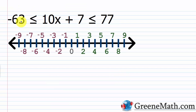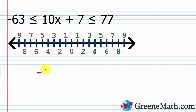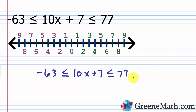For the next example, we have negative 63 is less than or equal to 10x plus 7, which is less than or equal to 77. You could also use the 'and' keyword: 10x plus 7 is greater than or equal to negative 63, and it's less than or equal to 77. Since there's just a variable expression in the middle, it's easier to do the same thing to each part rather than splitting it up.